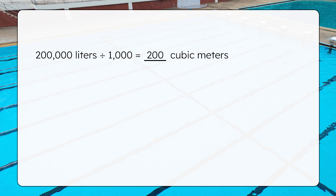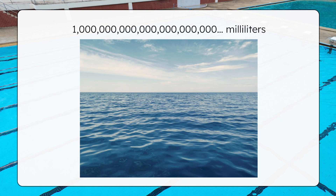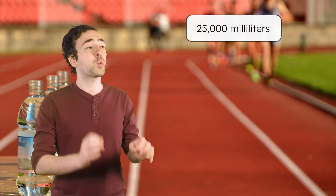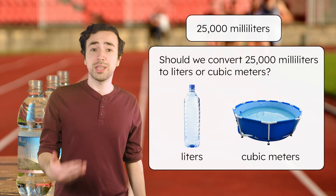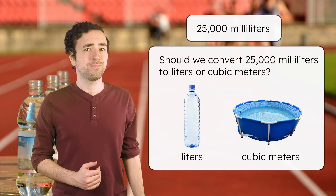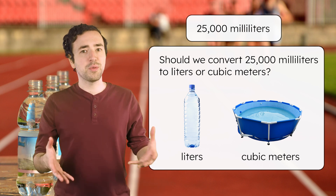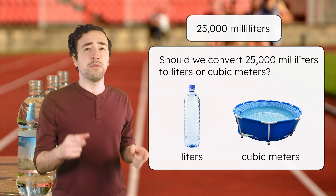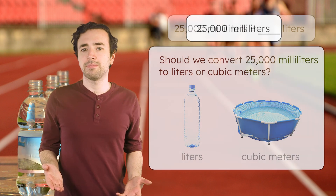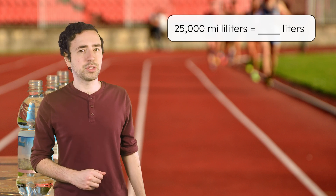Using the right unit for the situation makes numbers easier to read and work with. Imagine if we measured a whole ocean in milliliters — that would be way too many zeros. During the triathlon, runners stop at water stations to stay hydrated. One station starts with 25,000 milliliters of water. That's a big number, so should we convert it to liters or cubic meters? Since liters measure medium-sized amounts and we're measuring drinking water, liters make the most sense. So let's convert 25,000 milliliters to liters.